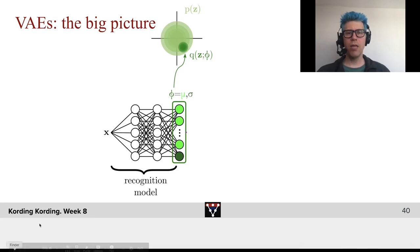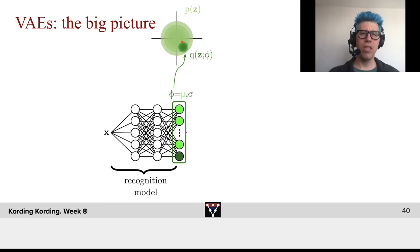Now this will effectively give us here a distribution in z-space, where we have p of z the prior and q of z phi, which tells us where we are in this space.